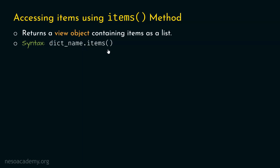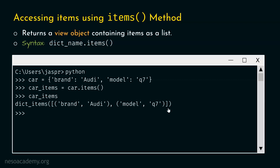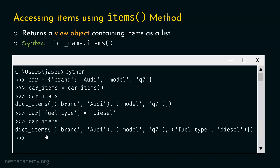Let's understand how to access items of a dictionary using the same example car dictionary. We type car_items equal to car.items(), hit enter, and type car_items. We get a view object with a list of all items: the first item is brand Audi, and the second is model Q7. Let's add a new item fuel_type diesel by typing car fuel_type equal to diesel. After hitting enter and checking car_items, we now get an updated view object with three items: brand Audi, model Q7, and fuel_type diesel.